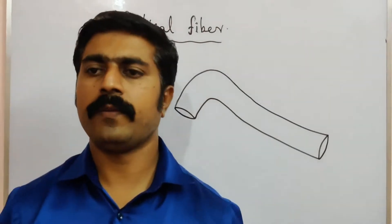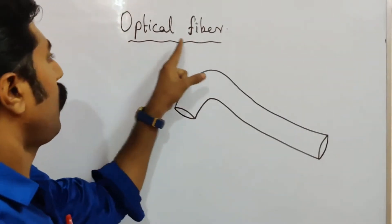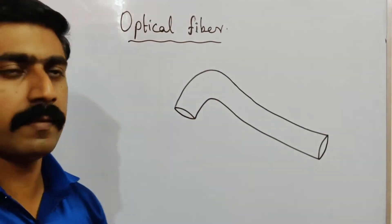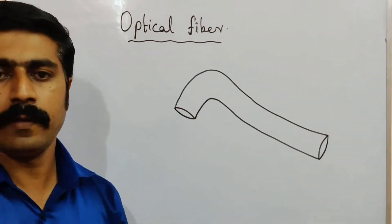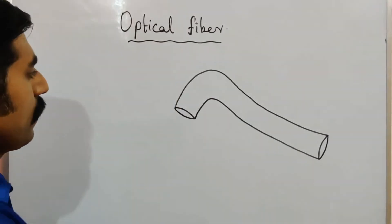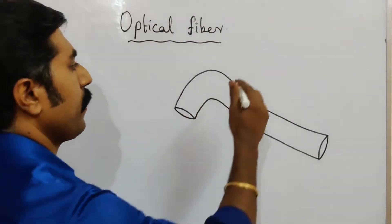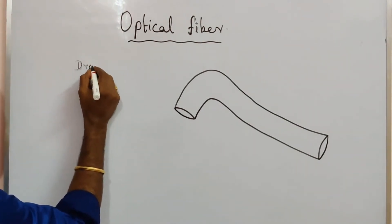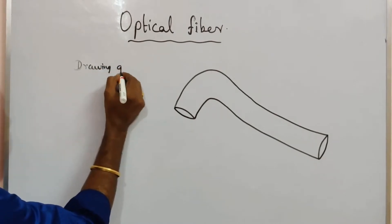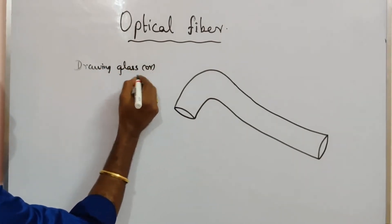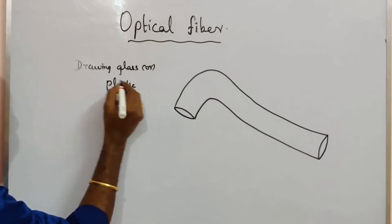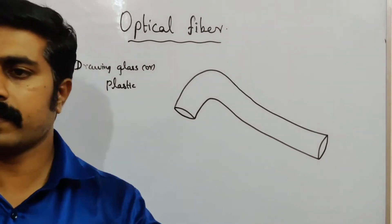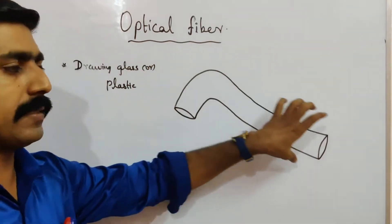Hi students, today we are going to discuss about the topic optical fiber. This is from 12th standard, specifically second volume, lesson number six. Optical fiber is made up of drawing glass or plastic.